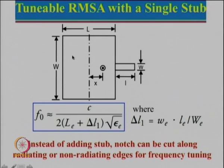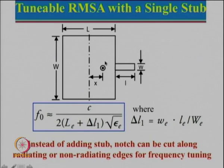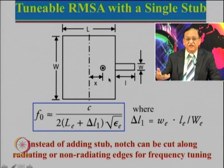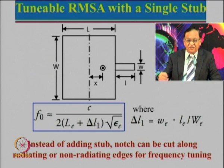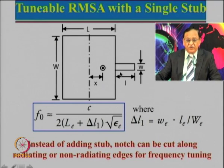One of the simpler ways to design a tunable rectangular microstrip antenna is with a single stub. We have an antenna fabricated with length L, width W, and a feed point. For this particular case, you measure the frequency which is not the desired frequency — it is slightly shifted either increased or decreased. By adding a stub, we can actually reduce the frequency, and I will also tell you how to increase the frequency.